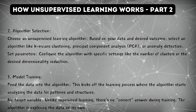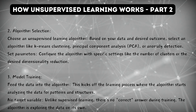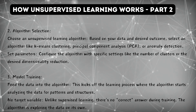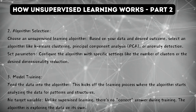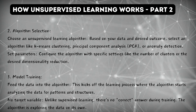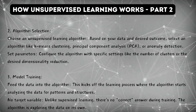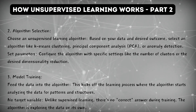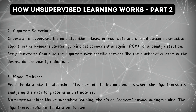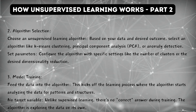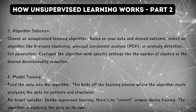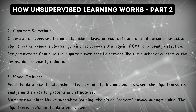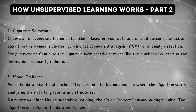Number two, selection of algorithm: choose an unsupervised learning algorithm based on your data and desired outcome. Select an algorithm like k-means clustering, principal component analysis (PCA), or anomaly detection. Set parameters to configure the algorithm. Step number three, model training: feed the data into the algorithm. This kicks off the learning process where the algorithm starts analyzing the data for patterns and structures. Unlike supervised learning, there's no correct answer during training — the algorithm is exploring the data on its own.